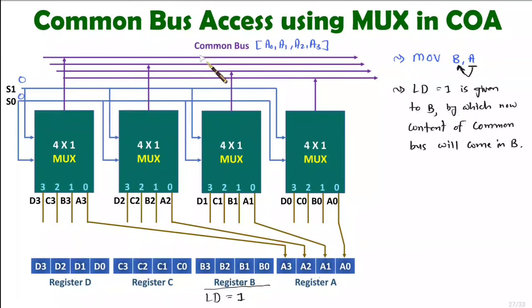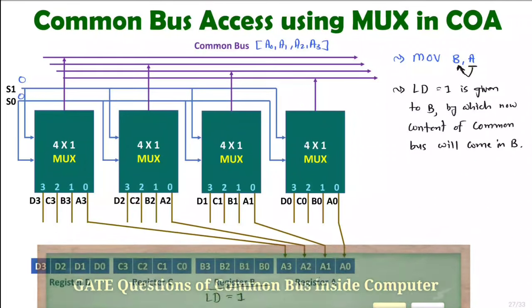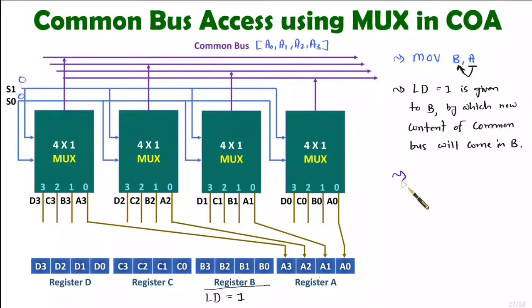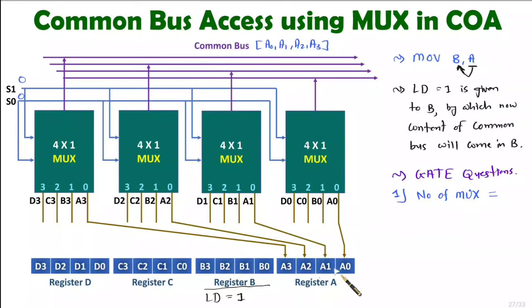Similarly, you can place data of memory as well on the common bus. Now, questions may come in the GATE examination. One question type is based on how many multiplexers can there be. The number of multiplexers equals the number of bits inside the register. Here, for example, we have a register of size 4 bits — A0, A1, A2, A3 — so 4 multiplexers are required. The number of multiplexers in the circuit is based on the number of bits in the register.